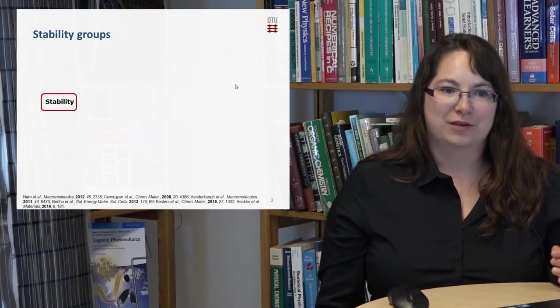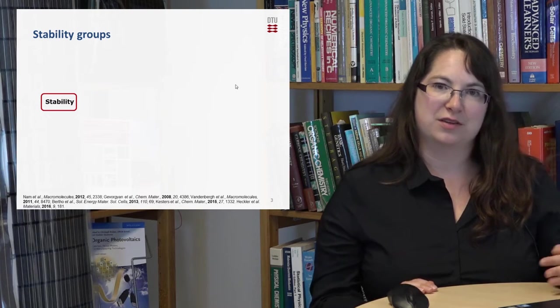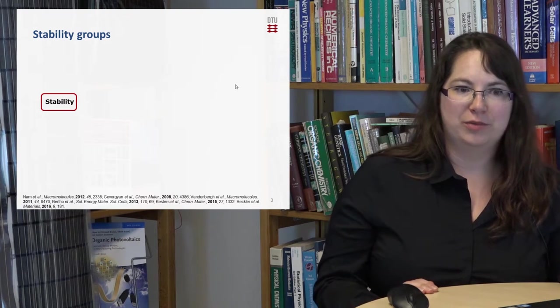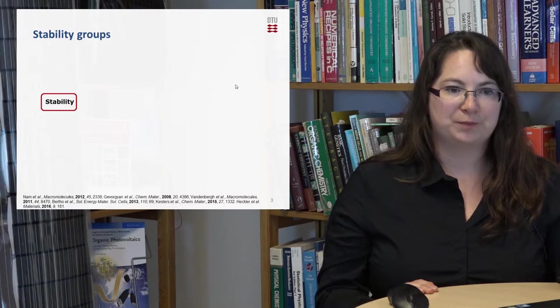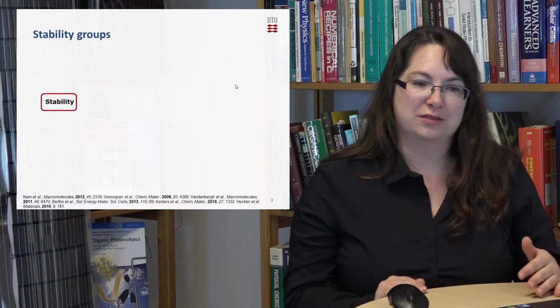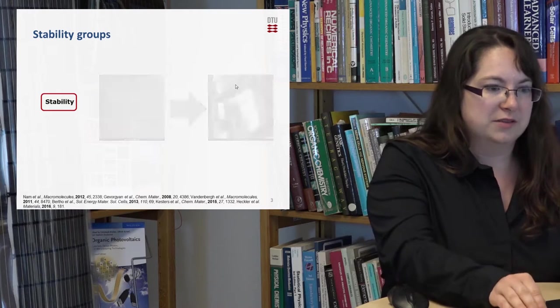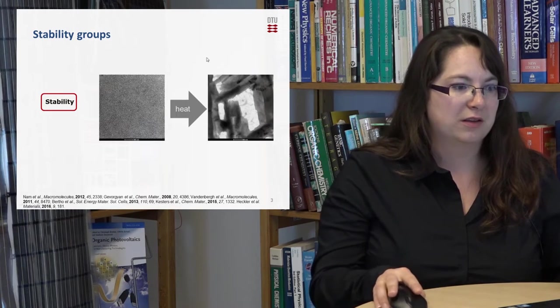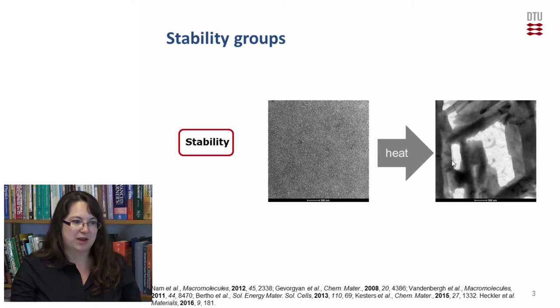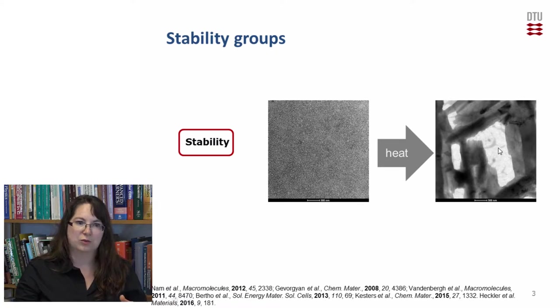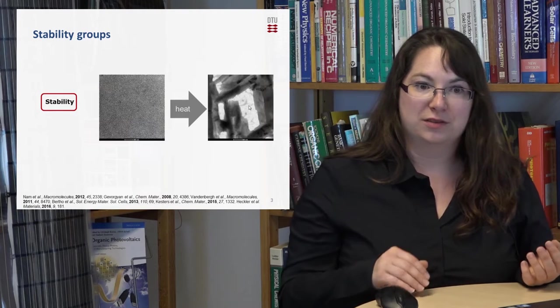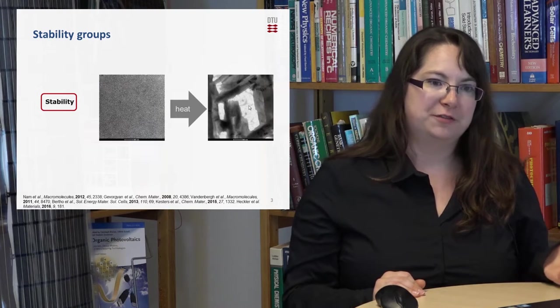The active layer of polymer solar cells consists in our case of a blended mixture of polymer and a fullerene derivative. However, this layer can be quite unstable towards external stress like heat. You can see in this TEM picture that the active layer after some time by heat influence starts to phase separate and we get fullerene crystals and polymer domains which can result in lower efficiency.